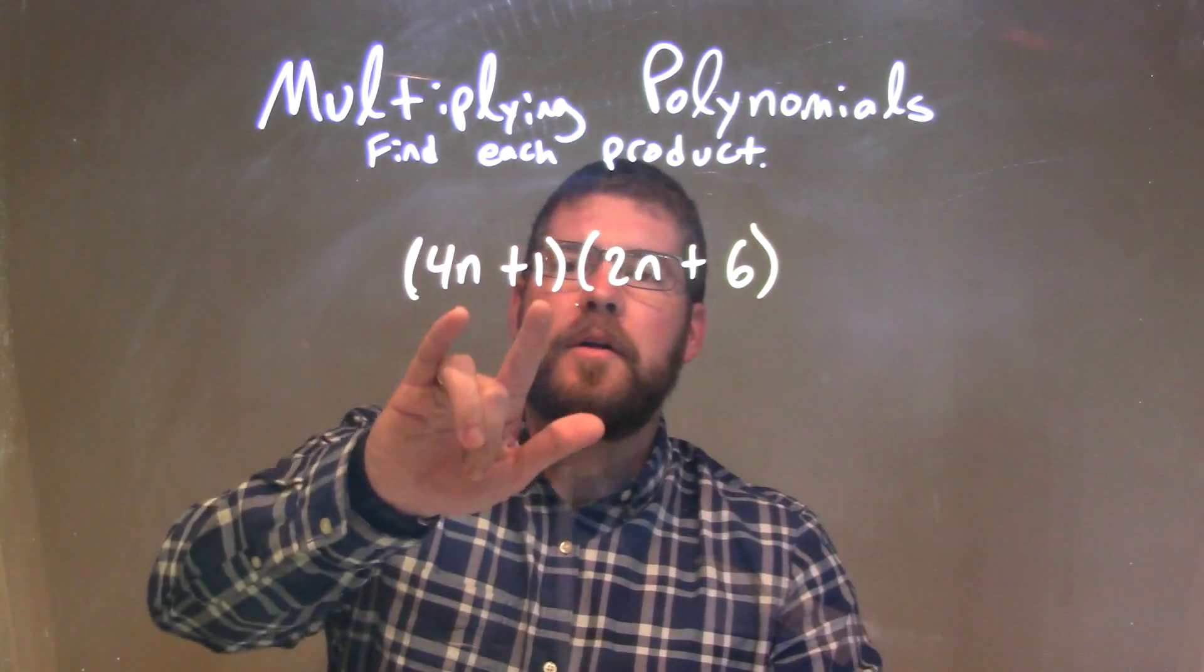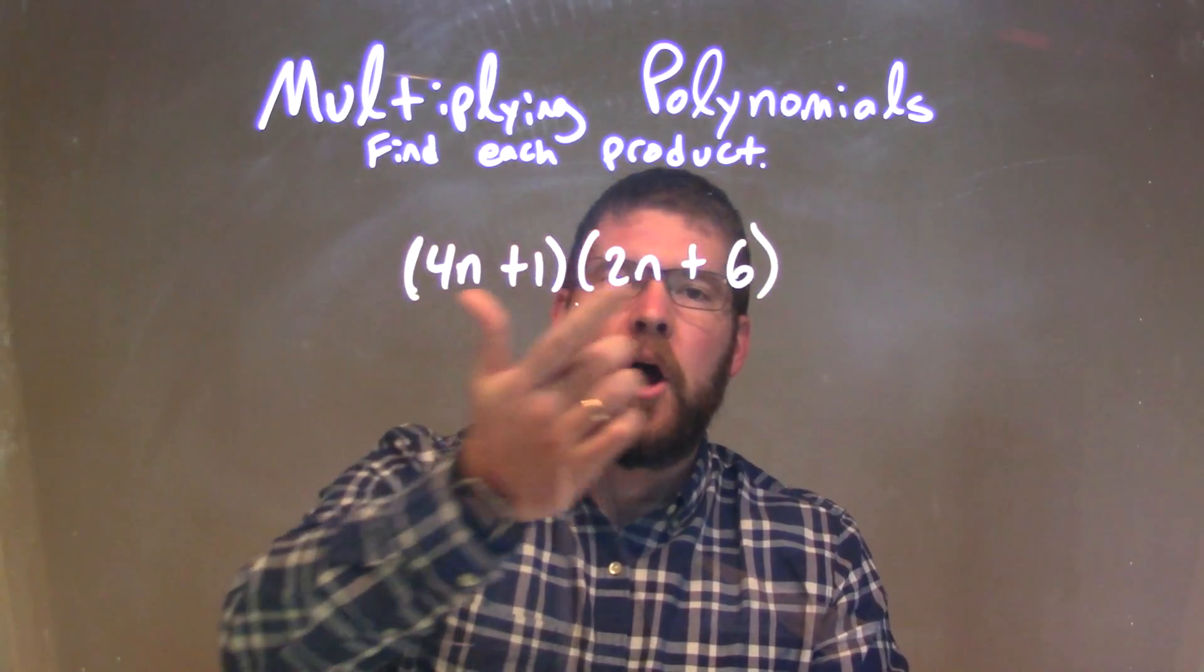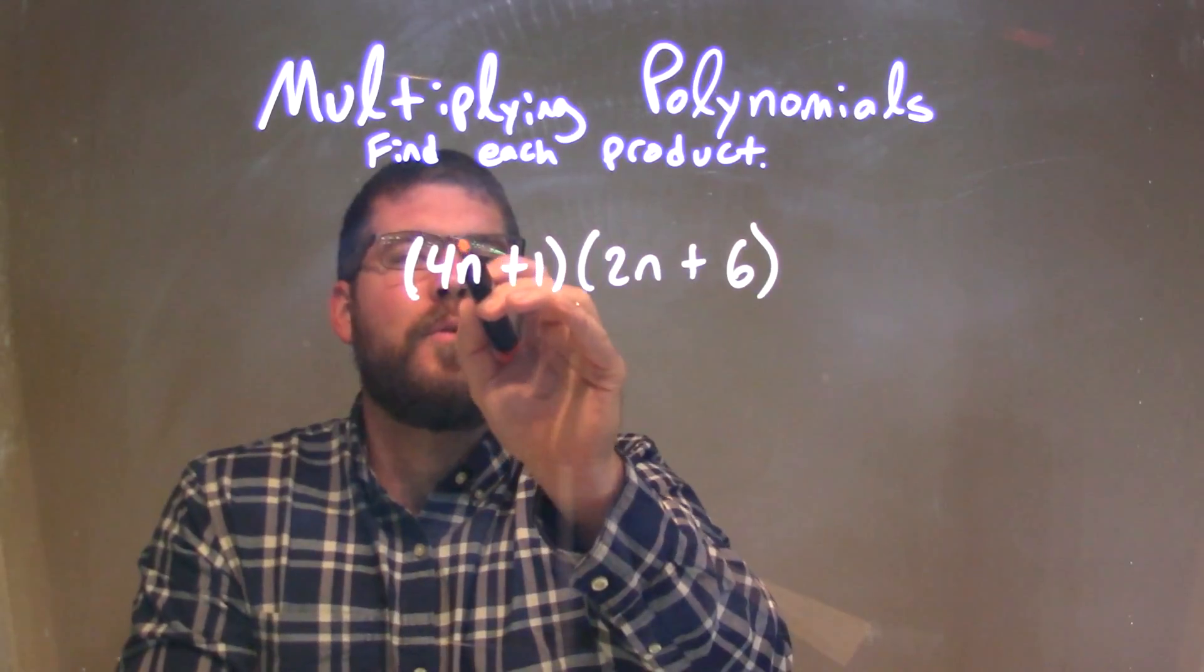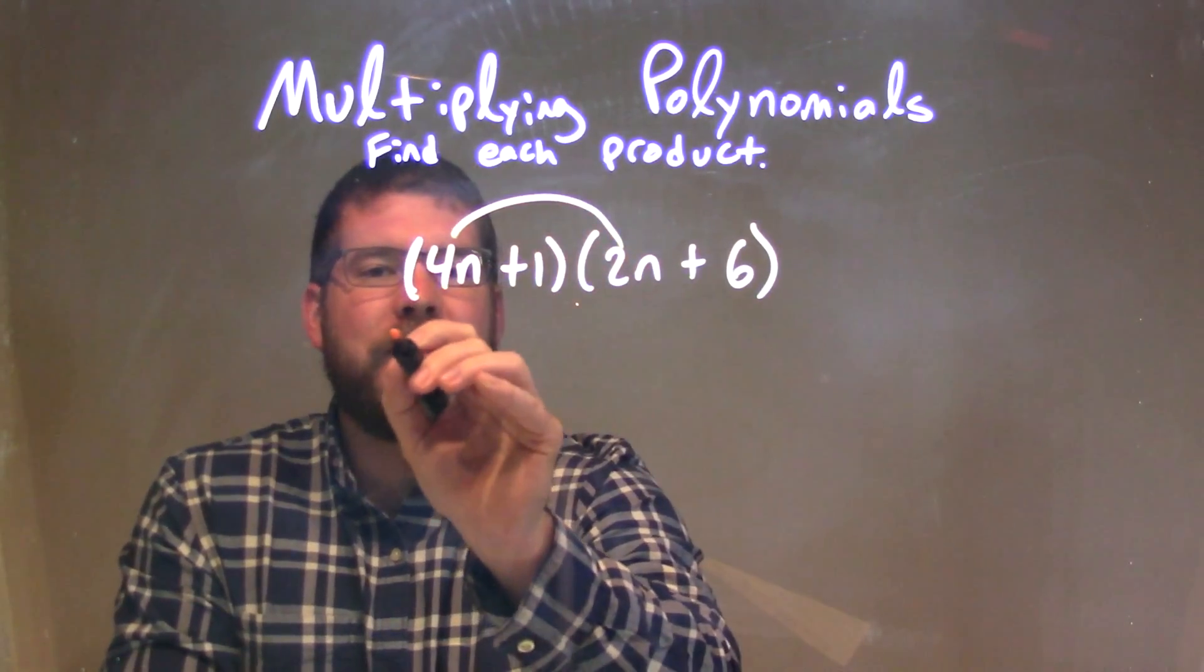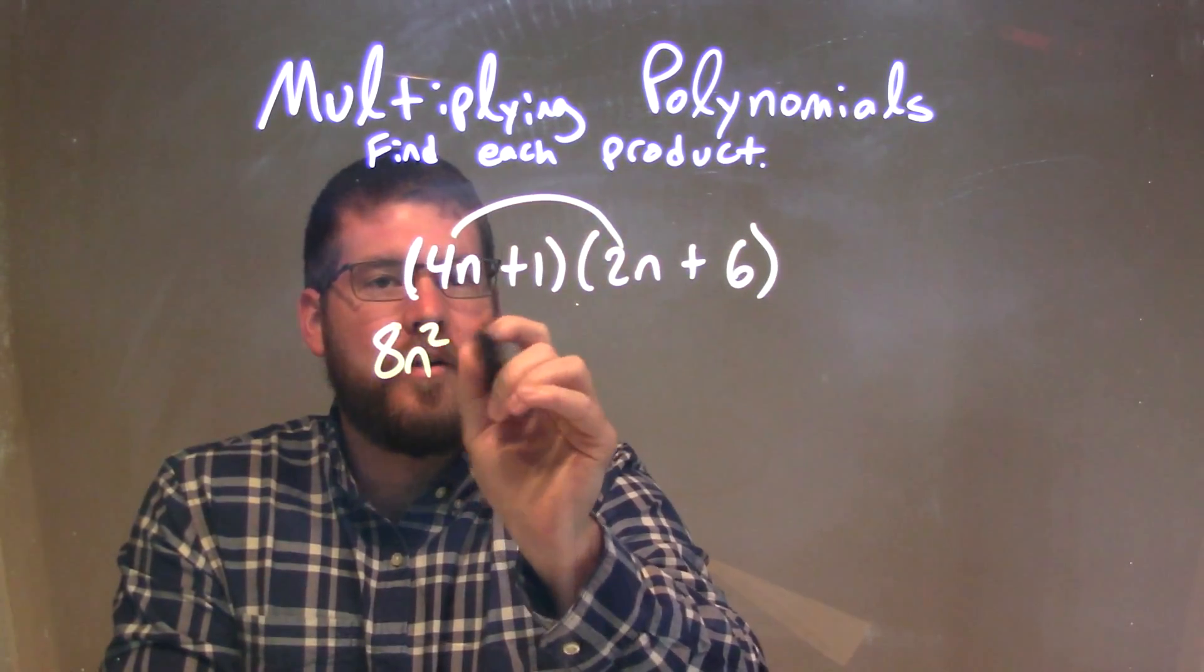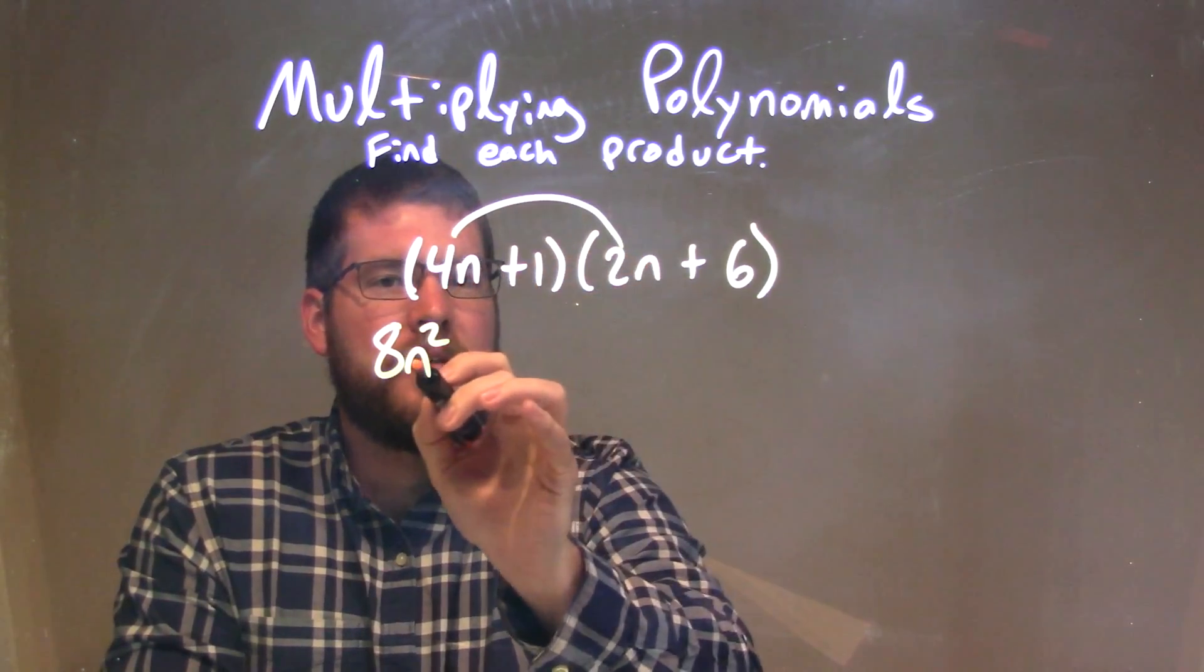All parts of my one parentheses need to be multiplied by all parts of my second parentheses. So 4n times 2n is 8n squared. 4 times 2 is 8, n times n is n squared.